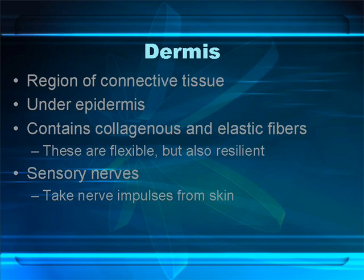The next layer, the middle layer of your skin, is your dermis — in between the epidermis and the subcutaneous level. This is the layer that contains the elastic fibers, which give your skin flexibility. When you bend your arm, your skin stretches out over your elbow. Without these elastic fibers in the dermis, your skin wouldn't be able to stretch. It's also in the dermis where the sensory nerves are located, where you'll find all the nerves that detect touch, temperature, pain, and pressure.